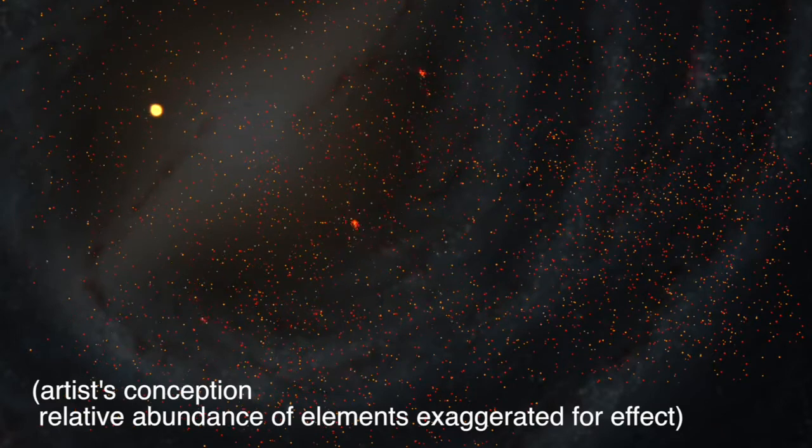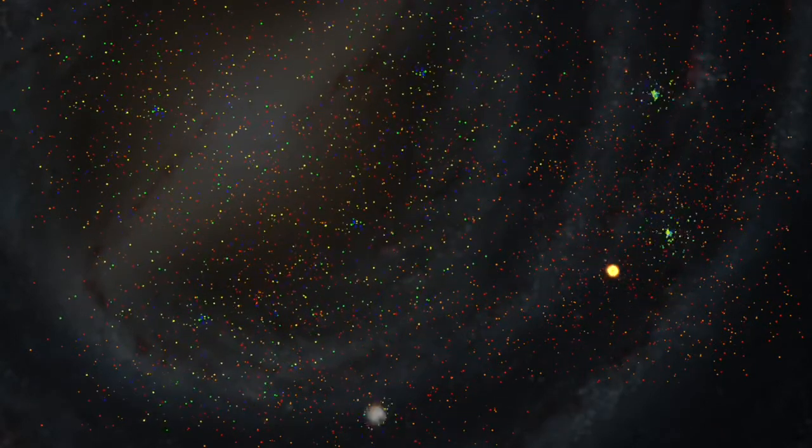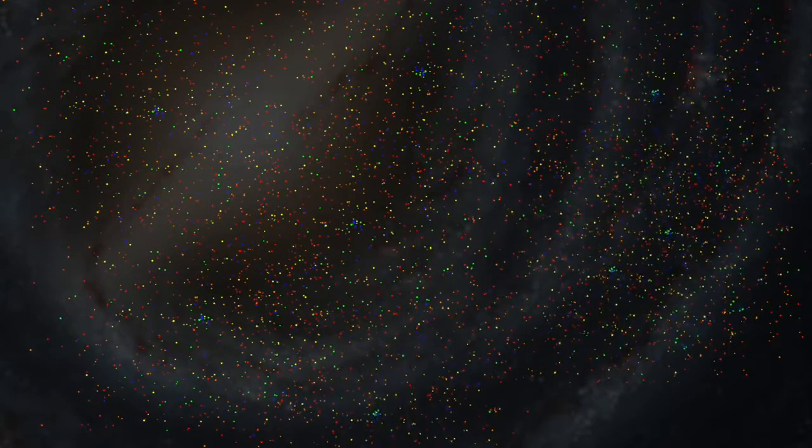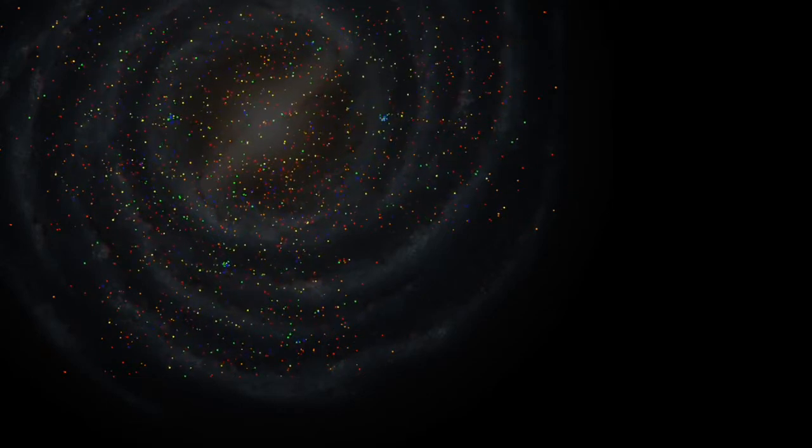In most galaxies, this process is cyclical, with each generation of stars contributing more heavy elements to the raw material from which the next set of stars will be born. But not in Segway 1, which likely failed to progress further because of its unusually tiny size. Segway 1's star formation ended at an early stage of galactic development.